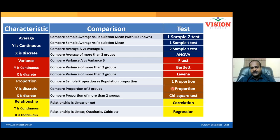You also studied one proportion, two proportion, chi-square. A few more tests are there: F-test, Bartlett-test, Levin-test.